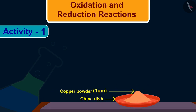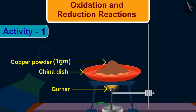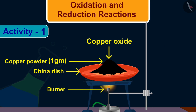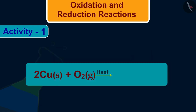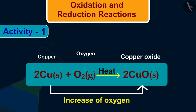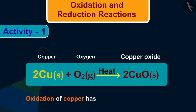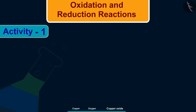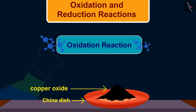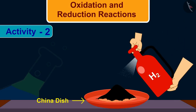Heat a china dish containing about one gram of copper powder. What do you observe? The surface of the copper powder becomes coated with black copper oxide. Why has this black substance formed? During the reaction there is an increase of oxygen in copper. Therefore we can say that oxidation of copper has taken place, and so this is an oxidation reaction because oxygen is added to copper and copper oxide is formed.